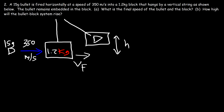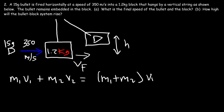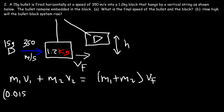For part A, we have two objects sticking together, so we use the same formula: M1V1 plus M2V2 equals (M1 plus M2) times v final. The mass of the bullet is 15 grams, which is 0.015 kilograms. Its speed is 350 meters per second. The block is initially at rest. M1 plus M2 is 0.015 plus 1.2.